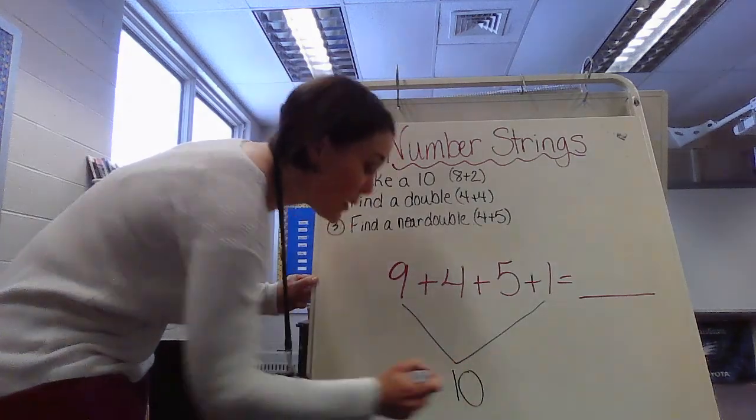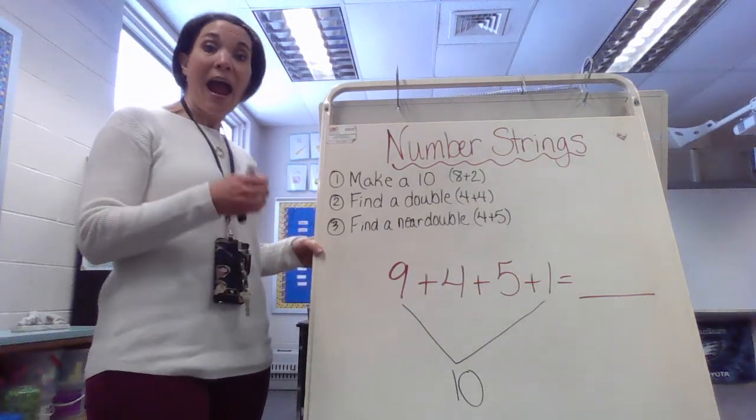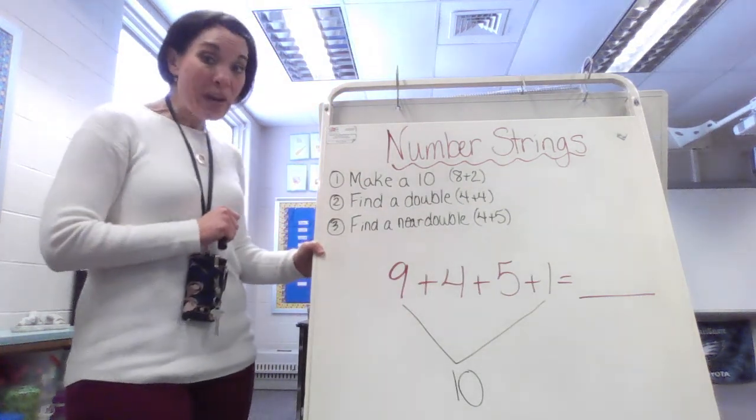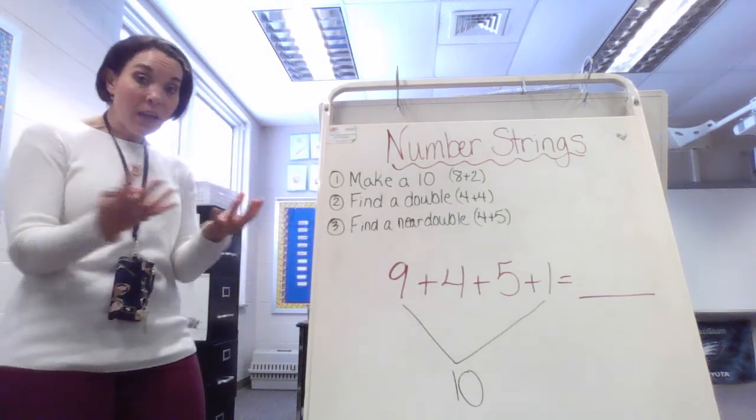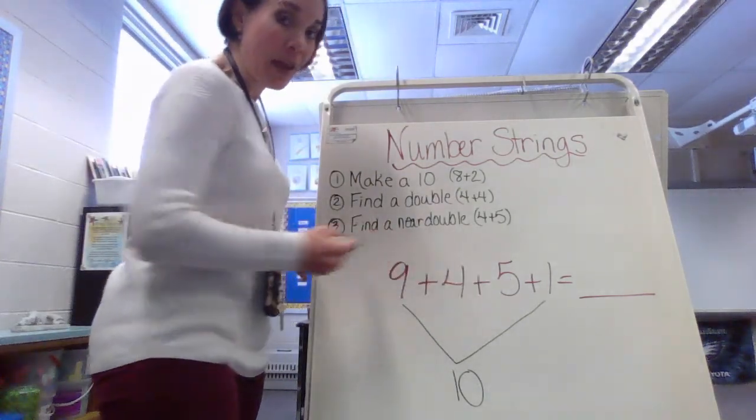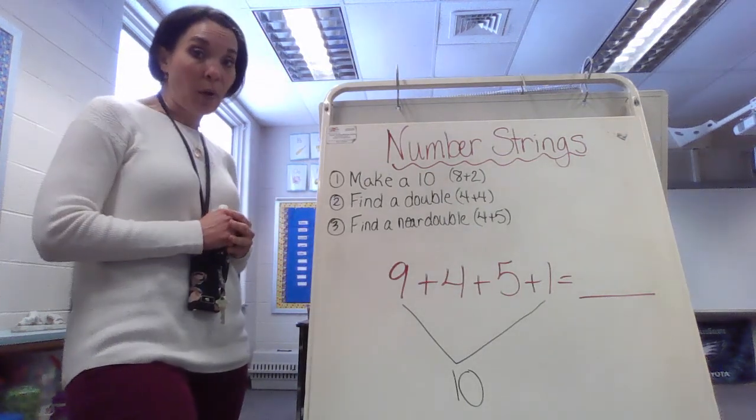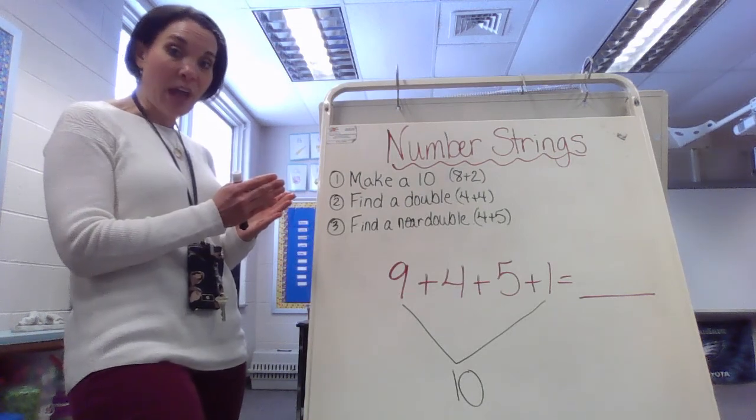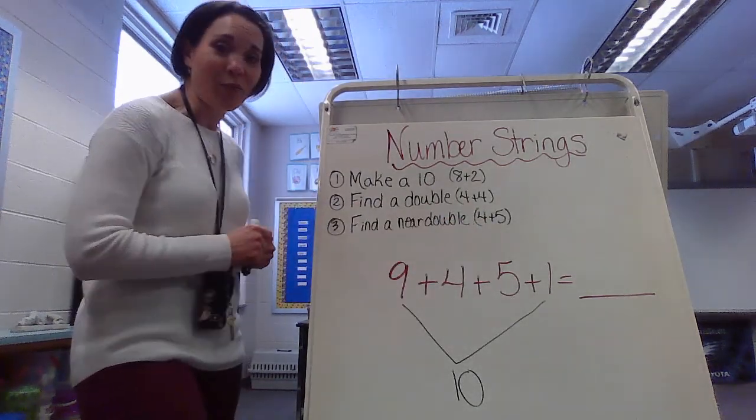There's our 10. Now usually there's just an additional number when we only have a number string with three addends in it, all right? This time we have 4, so we can make another combination before we put the last two pieces together. So here I have 4 and 5. Now, we know 4 and 5 are not identical, so therefore it is not a double. But when you're counting, 4 and 5 are right next to each other on that number line. So therefore, it's a near double. And how about that? I have 4 and 5 as our example.